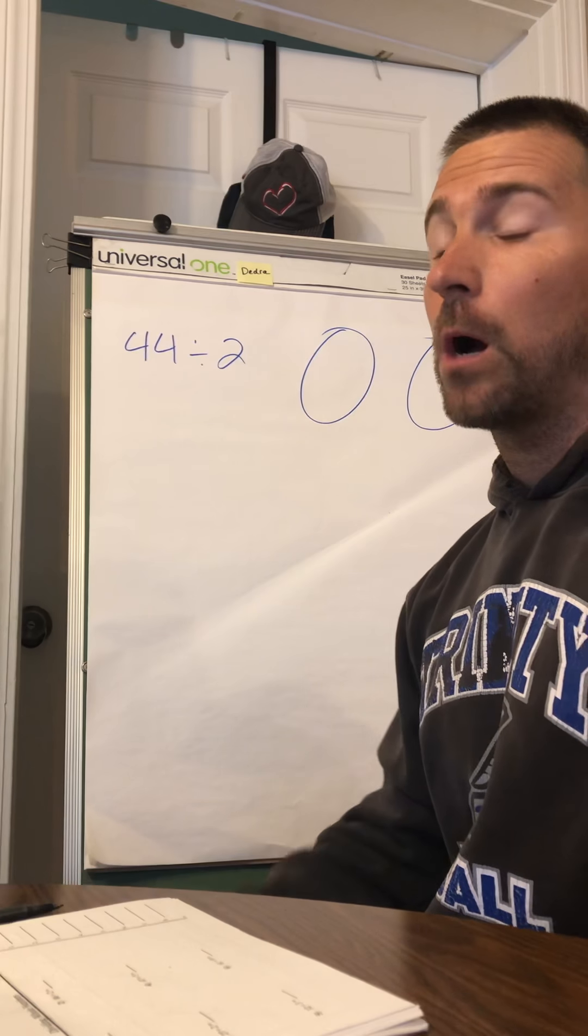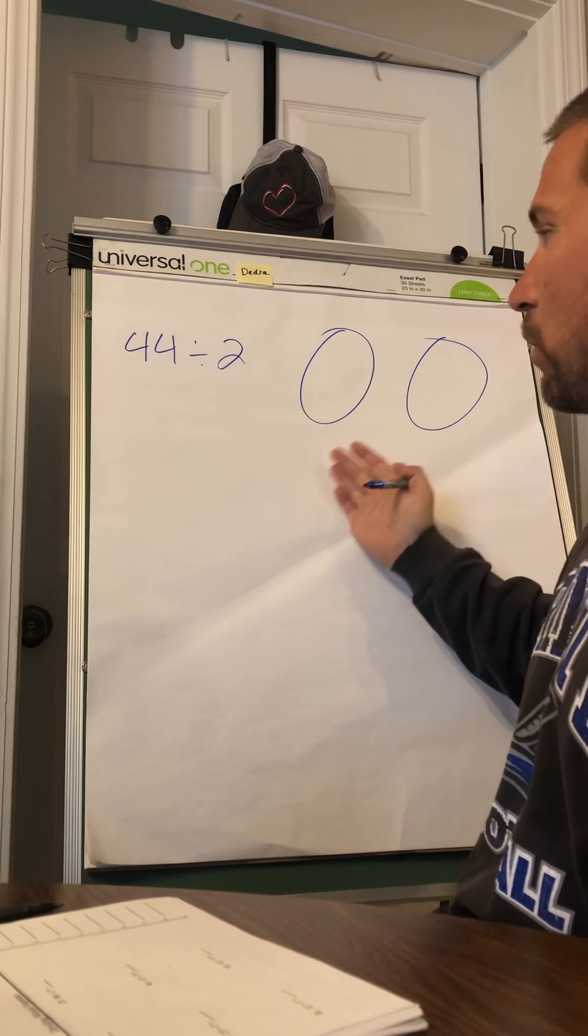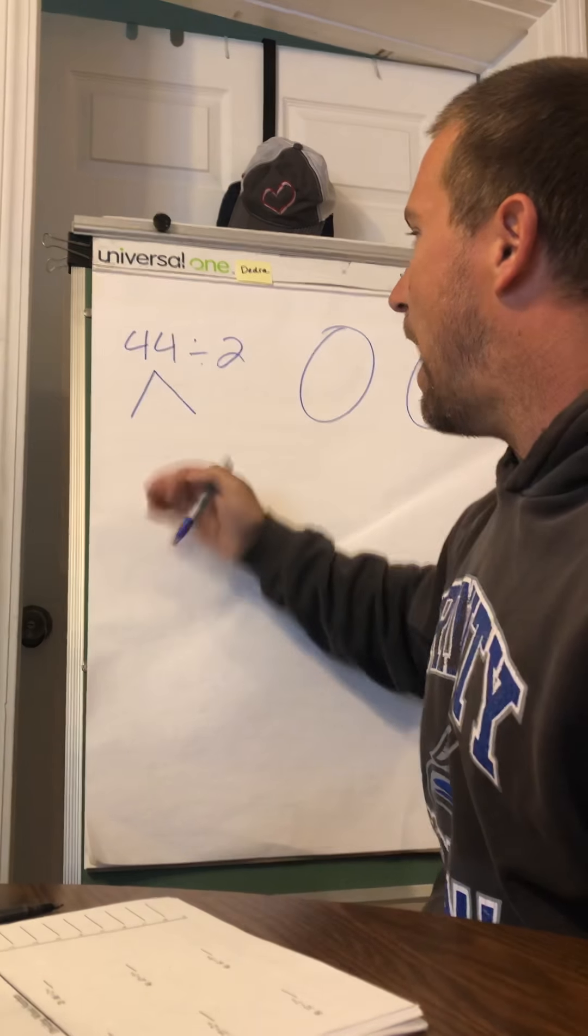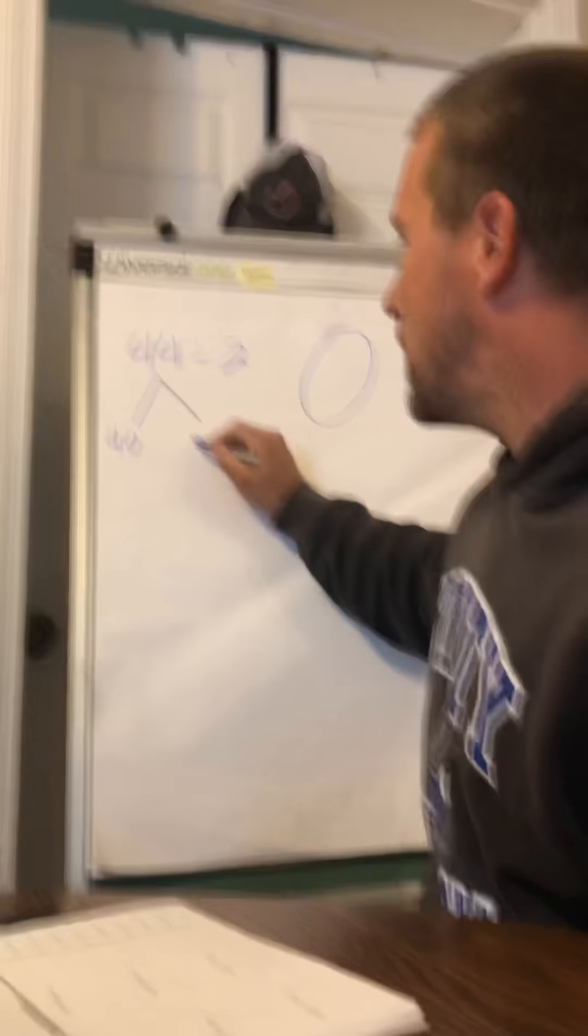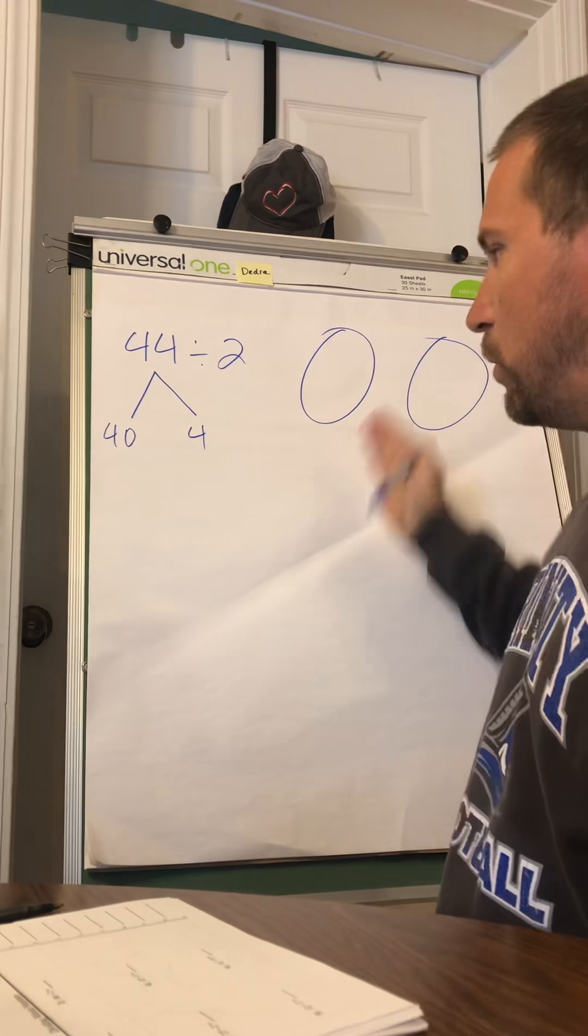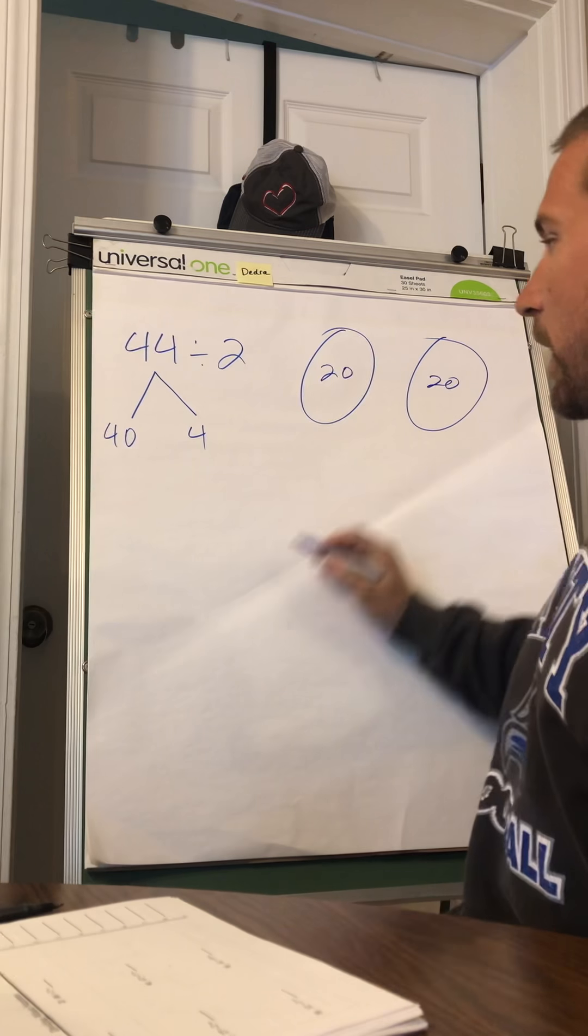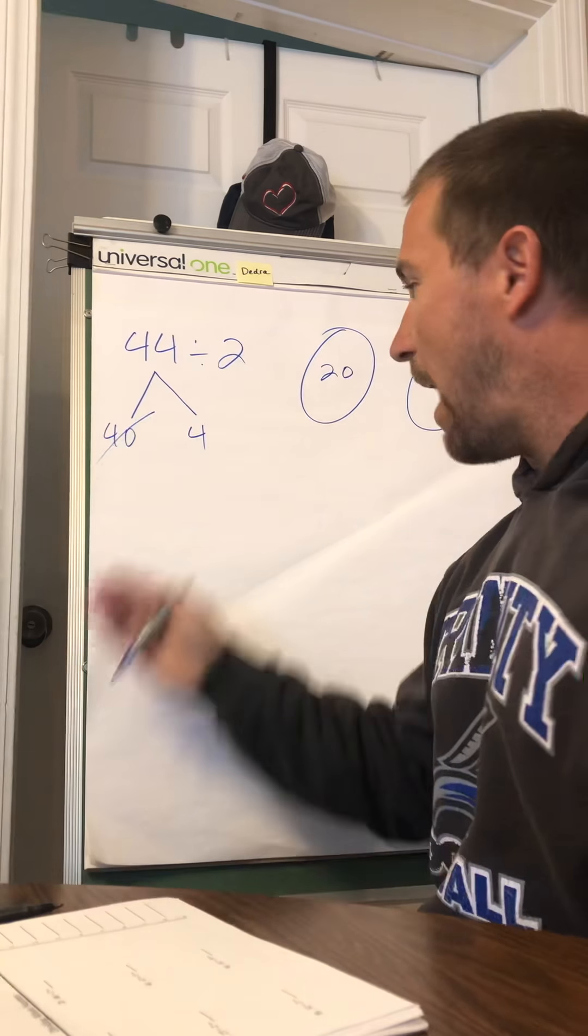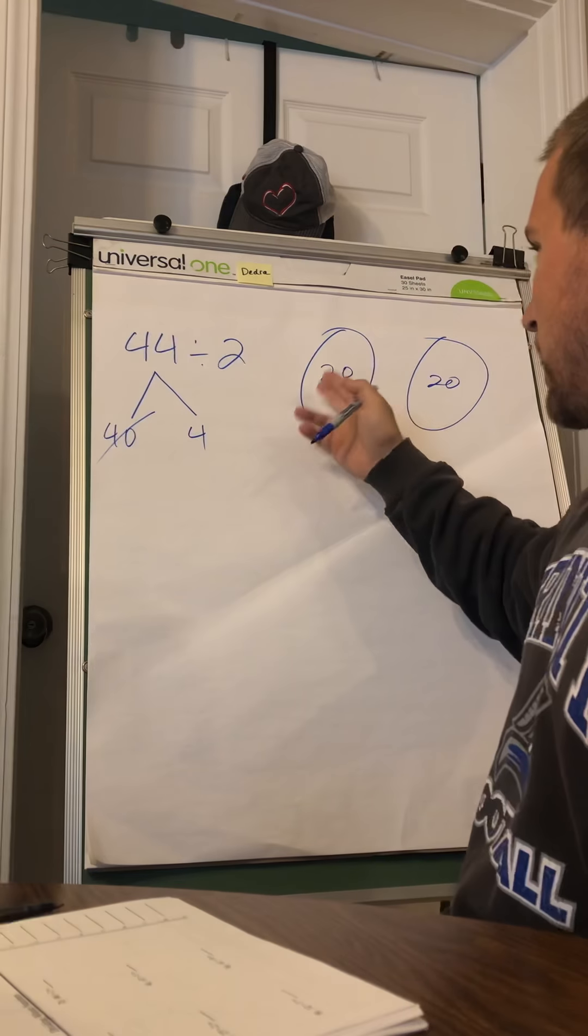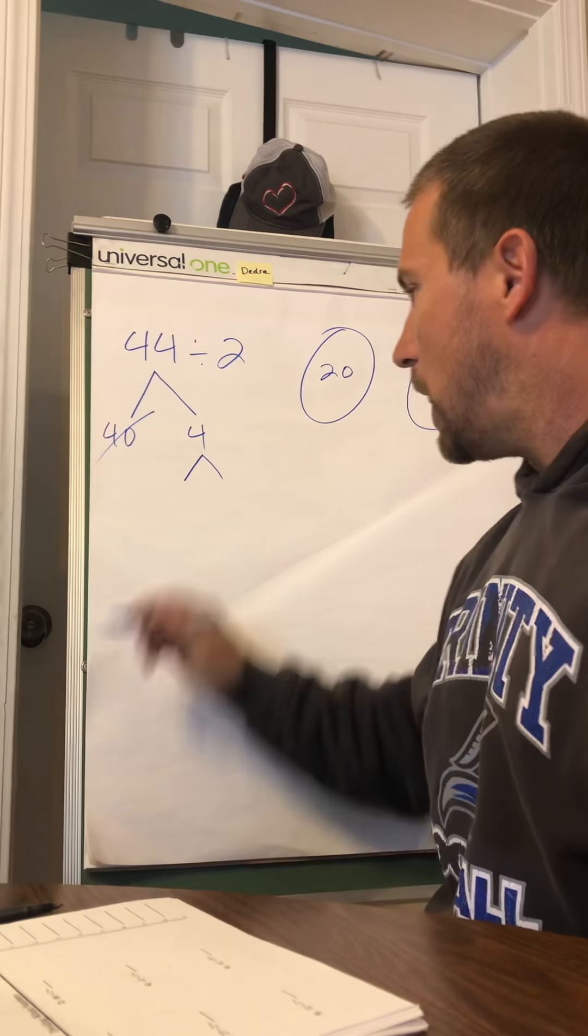44 divided by 2. Let's turn it into a multiplication sentence, because remember, division is just multiplication backwards. That's all that is. So we're going to flip this around. We're going to do blank times 2 equals 44. Okay, so what number times 2 would equal 44? Well, we know our answer, but let's pretend like we don't know our answer. So how many 2s would go into 44?